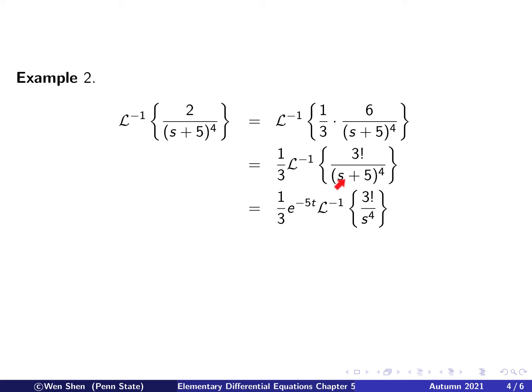So the next step is to apply the shift theorem number 1, which says that this shift in the s is associated with corresponds to multiplying by an exponential function e^(-5t). If you multiply by that, then you can shift it back, and then you'll be finding the inverse transform of 3! over s to the 4th. So s + 5 becomes just s.